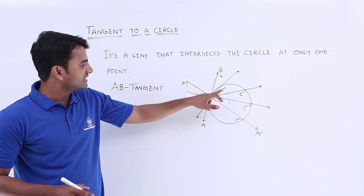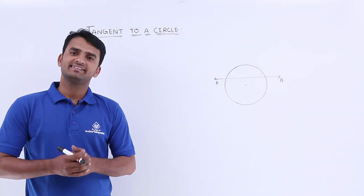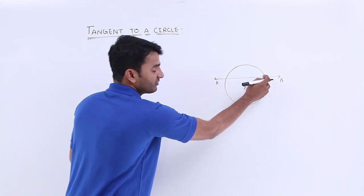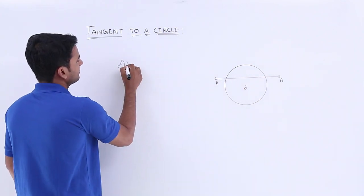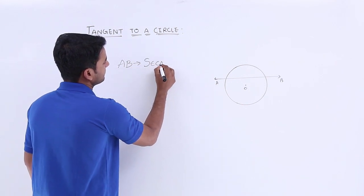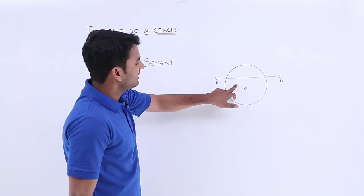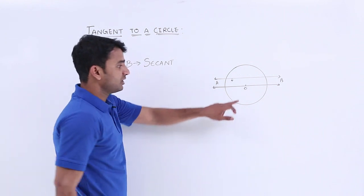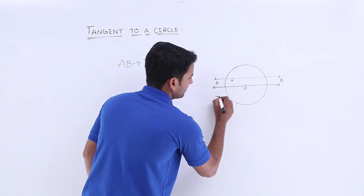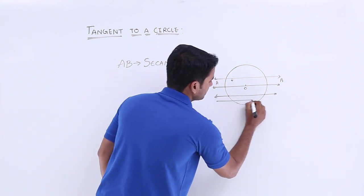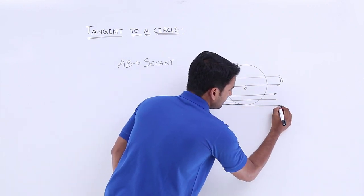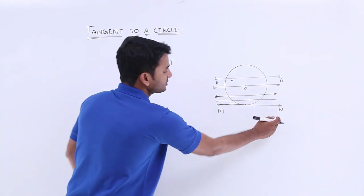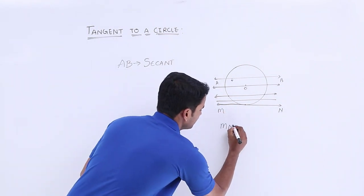So we can conclude that a tangent is a special case of a secant where two intersecting points coincide. In our next case, a circle is given with center O and a line AB which has two points of contact — so AB is a secant. If we start drawing parallel lines downward, each line also has two points of contact. But at one particular point we get a line with only one point of contact — let's call this line MN. Line MN has only one point of contact, so it is considered a tangent.